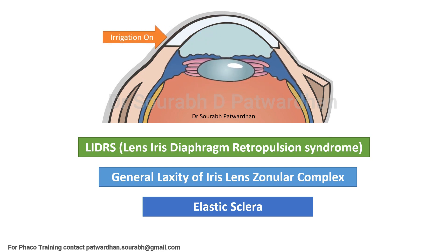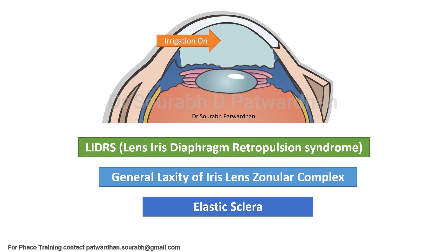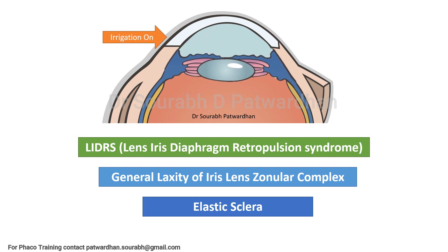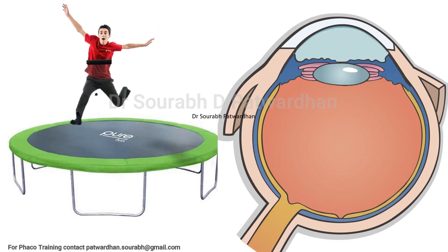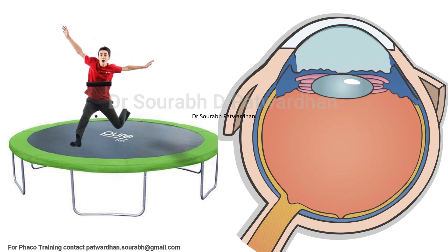During surgery, when you start doing FECO, the anterior chamber is very deep and you have to reach out to the nucleus to tackle it. I call it trampoline cataract because it is similar to jumping on a trampoline — when you jump on it, the trampoline goes down; when you come up, the trampoline comes up. That is how the anterior chamber also looks when you are operating.